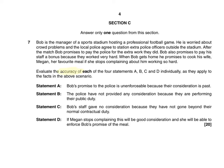So if we look at the scenario on screen: Bob is the manager of a sports stadium hosting a professional football game. He is worried about crowd problems and the local police agree to station extra police officers outside the stadium. After the match, Bob promises to pay the police for the extra work. Bob also promises to pay his staff a bonus because they worked very hard. When Bob gets home, he promises to cook his wife Megan her favourite meal if she stops complaining about him working so hard. There are three situations: one with the police, one with the staff, and one with Megan. The question asks you to evaluate the accuracy of each of the four statements A, B, C and D as they apply to the facts.